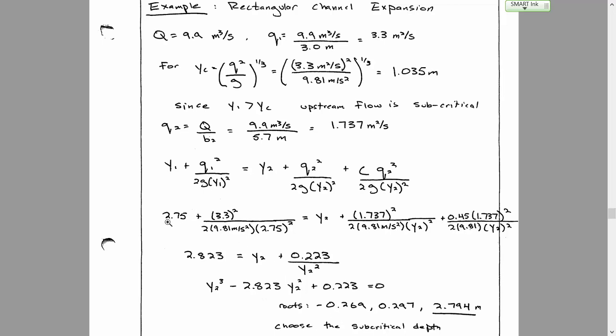The initial steps are: calculate flow per unit width at section one, calculate it at section two, then determine critical depth at each location — they'll be different since q varies. Upstream flow depth greater than critical depth means subcritical conditions. The specific energy at section one is 2.823 meters, equal to E₂ plus losses. Solving the resulting equation gives a depth of about 2.8 meters.